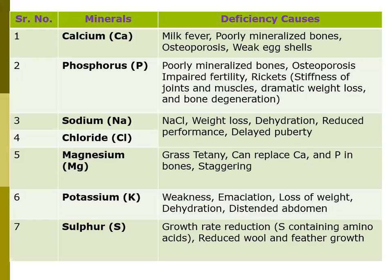Magnesium deficiency can cause grass tetany in animals. It can also replace calcium and phosphorus in bones, which is dangerous, and causes staggering in animals. For potassium, the deficiency causes weakness, loss of weight, dehydration, and distended abdomen in animals.